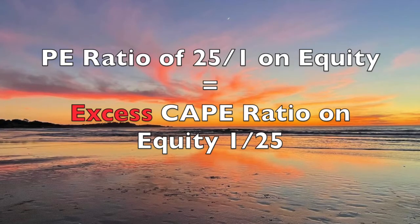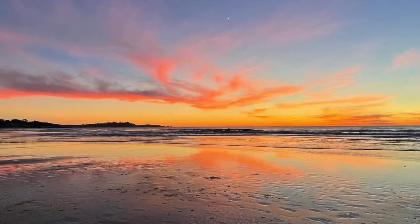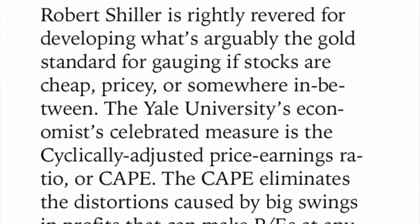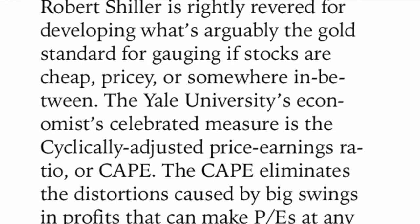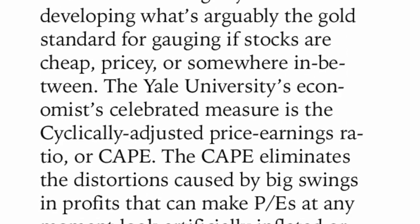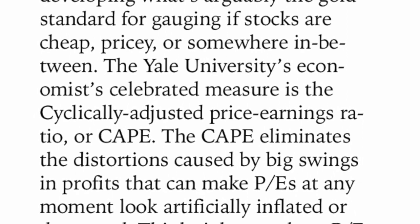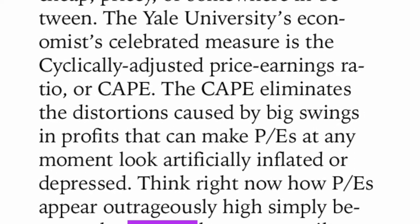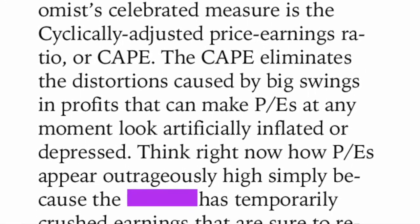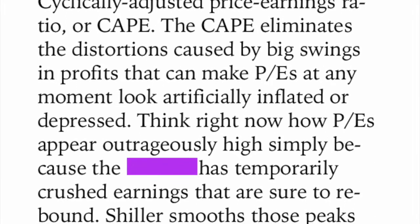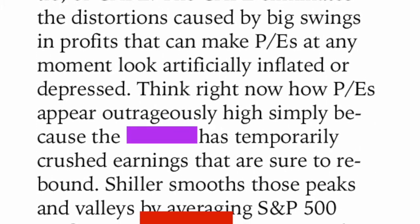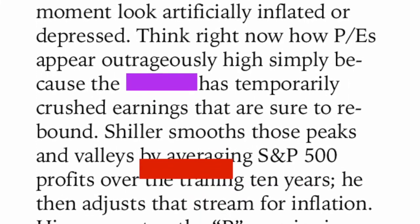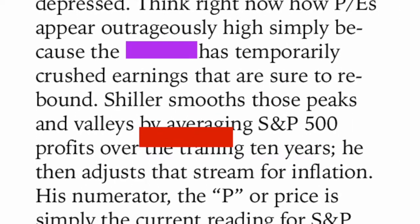We're going to be looking at the Excess CAPE. Ultimately, this writer says it's not a very good measure. Robert Shiller is rightly revered for developing what's arguably the gold standard for gauging if stocks are cheap, pricey, or somewhere in between. The Yale economist's celebrated measure is the Cyclically Adjusted Price-to-Earnings Ratio, or the CAPE. The CAPE eliminates the distortion caused by big swings in profits that can make PEs at any moment look artificially inflated or depressed.